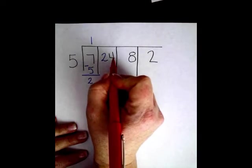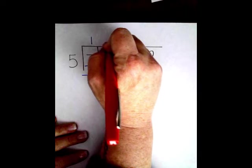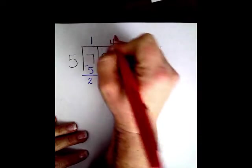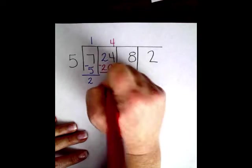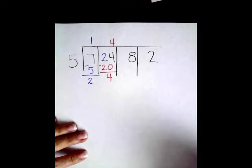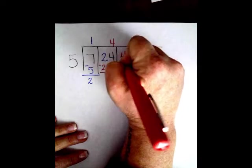5 goes into 24, 4 times. 4 times 5 is 20. I'm going to subtract and have 4 left over. I'm going to bring my 4 up here.